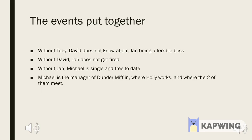Characters that show inhibitory relationships include David, who fires Jan, and Jan, who is in a relationship with Michael, keeping him from pursuing Holly.